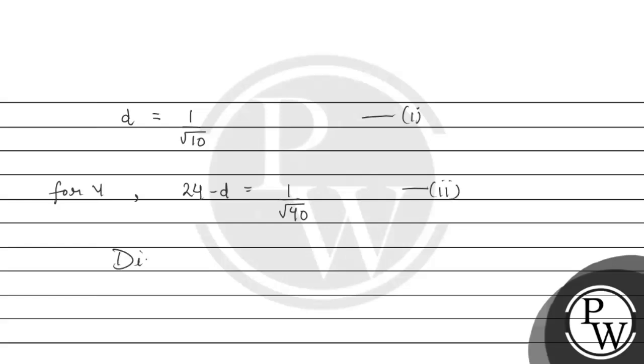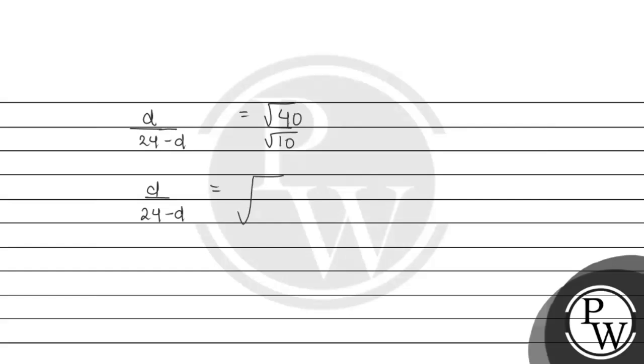We will divide equation 1 by 2 to find the value of d. So from here, d upon 24 minus d will be equal to under root of 40 upon under root of 10. So further, d upon 24 minus d will be equal to under root 40 upon 10. We can cancel this, so d upon 24 minus d will be equal to under root 4.